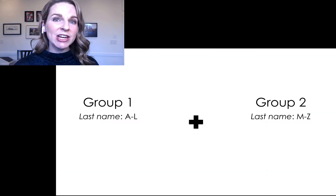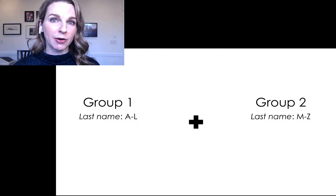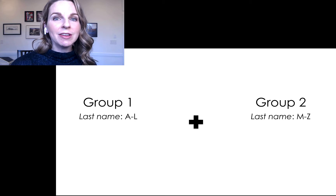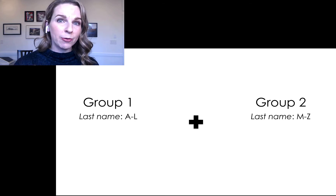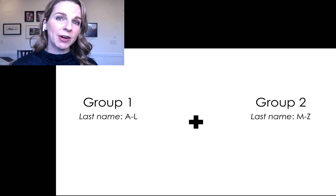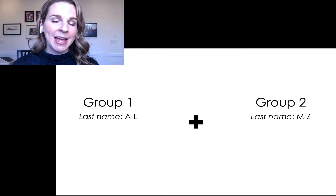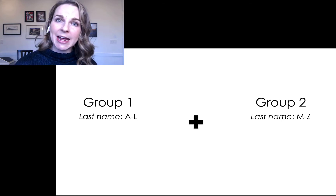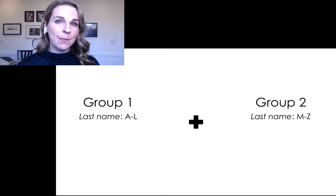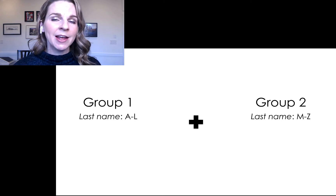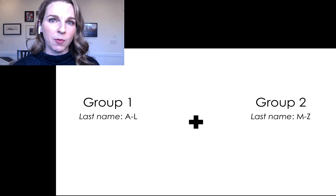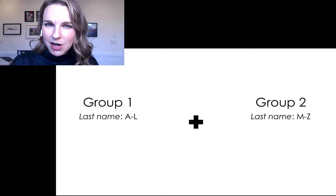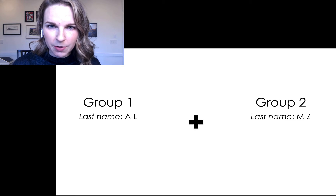I'm going to assign each of you to a particular group. If your last name begins with the letter A through L, you're in group one. If your last name begins with the letters M through Z, you're in group two. And if your last name is complicated like mine, just choose a group.